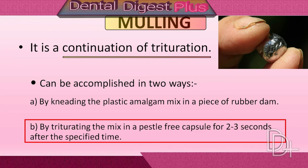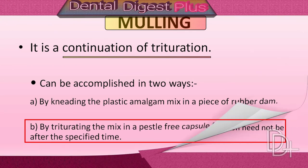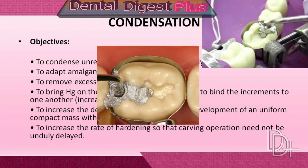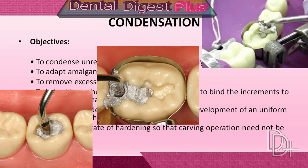Mulling is not necessary for mechanically triturated amalgam. Condensation refers to the incremental placement of the amalgam into the prepared cavity and compression of each increment into the previously condensed increment. Amalgam should be condensed into the cavity within three minutes after trituration. The goal of condensation is to compact the alloy into the prepared cavity so that the greatest possible density is attained, resulting from a reduction of excess mercury and porosity within the amalgam.